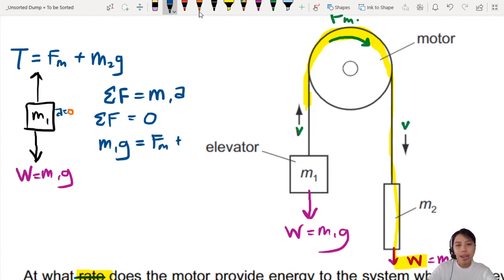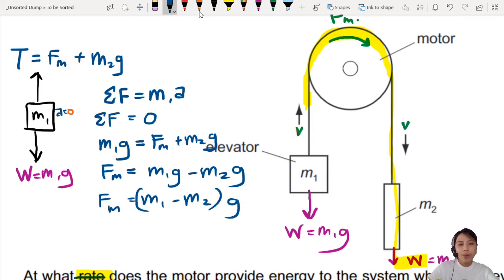So I'm going to say M1G equals to all the upwards forces, which is FM, plus M2G. And we want to find the force of the motor. So I rearrange a bit. This will be M1G minus M2G. And I guess you could simplify a bit. M1 minus M2 in the bracket times G. We're done.